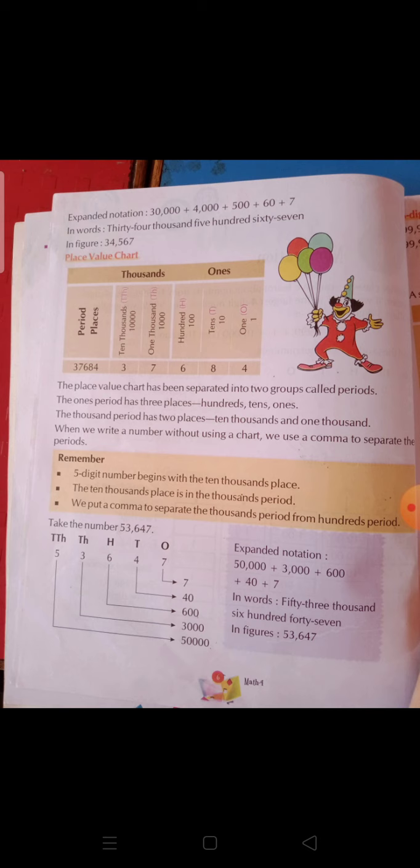We will read here about ones and thousands. Here it is given: period places. The number given is 37,684. In ones there is ones, tens, and hundreds. And in thousands there is one thousand and ten thousand.